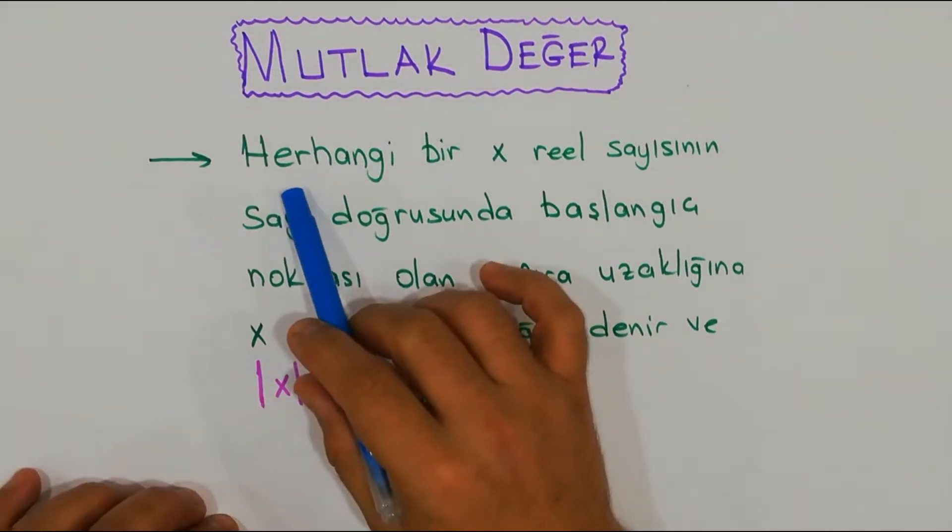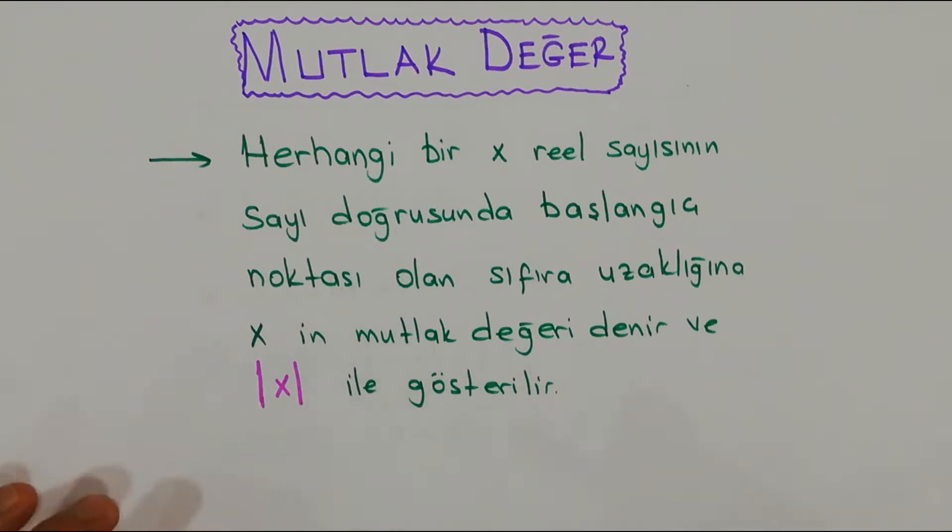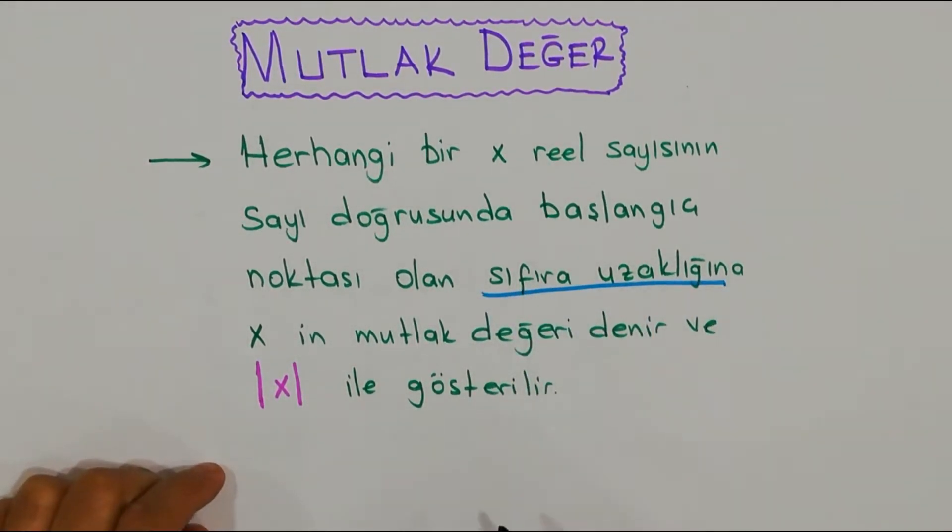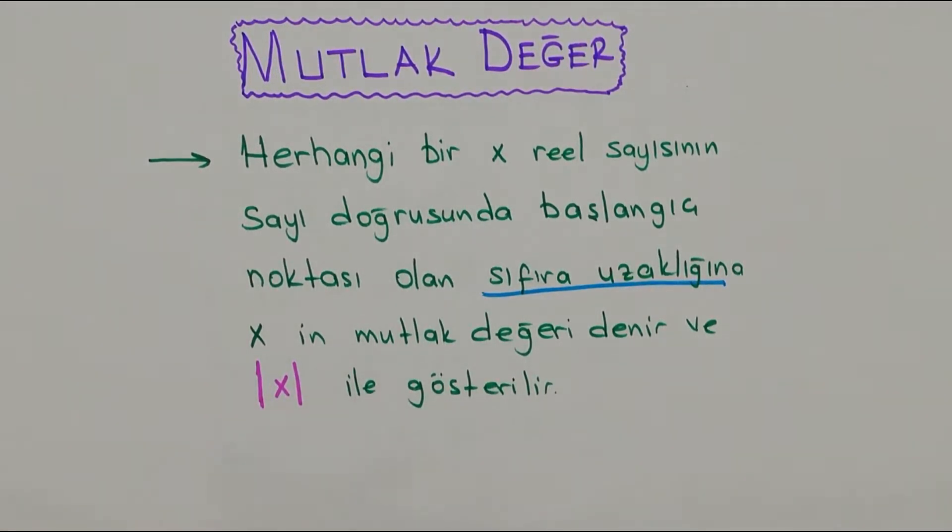Başlıyoruz arkadaşlar. Herhangi bir x reel sayısının sayı doğrusunda başlangıç noktası olan sıfıra uzaklığına x'in mutlak değeri denir ve iki çizgi arasında gösterilir. Hep şunu diyoruz ya, mutlak değer negatif olamaz. Nedeni ne biliyor musunuz arkadaşlar? Hemen bunun Türkçe manası - uzaklıktan bahsediyoruz.